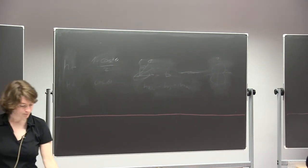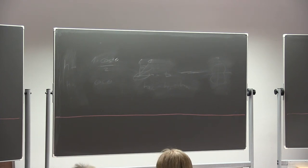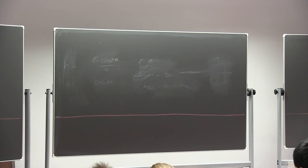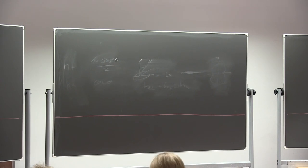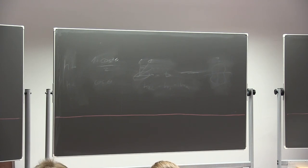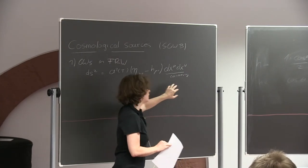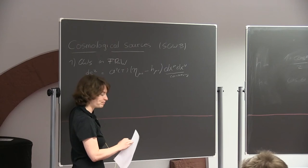Today we talk about cosmology. The first thing we need to do is take into account the expanding universe. We consider the Friedmann-Robertson-Walker metric, where we have a scale factor giving the overall scaling of the universe, a flat Minkowski metric, a small perturbation, and these are the co-moving coordinates. The magic of co-moving coordinates is that essentially all your equations look nearly the same as before — you're just working in these coordinates.